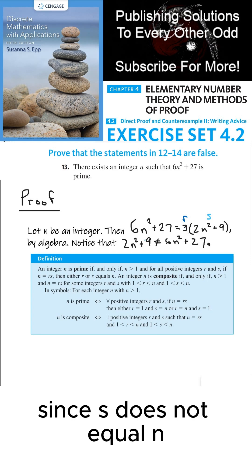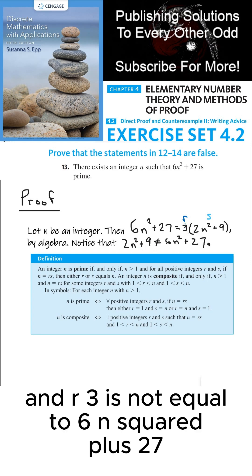But that's not the case since s does not equal n, and r is not equal to 6n squared plus 27.